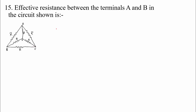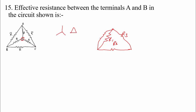Fifteenth question: you have to determine the effective resistance between terminals A and B. You are having an inside star network and on the outside a delta network. I am going to convert the inner star network to a delta network. After conversion, I will get three resistances R1, R2, and R3, and the outer resistances are each R.